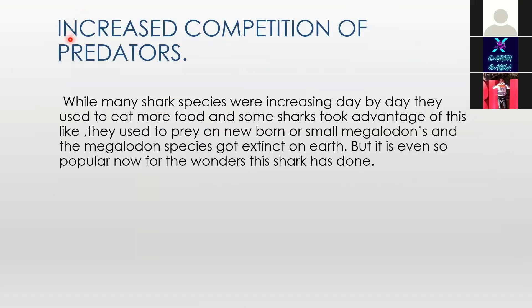Increased competition of predators: As many shark species were increasing day by day, they needed more food. Some sharks took advantage of this and preyed on newborn or small megalodons. And so the megalodon species got extinct on earth — but it is still very popular now for the wonders this shark has done. Thank you.